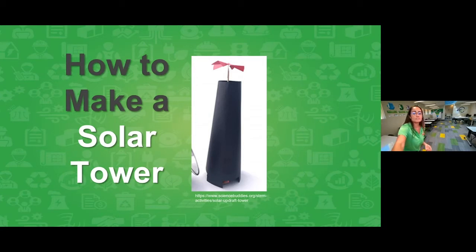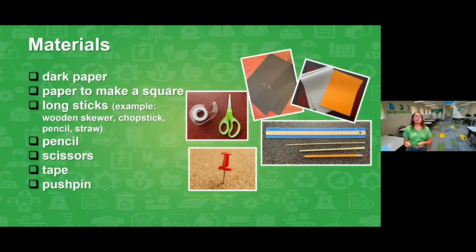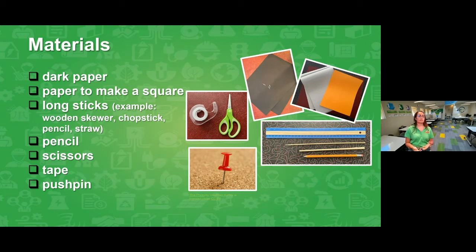Since we're doing this as a live stream, if you don't have all your materials ready, that's totally okay — you can pause, grab things, come back, or watch the archived version on our YouTube channel. For your solar tower you'll need dark paper. I'll explain more about why specifically dark paper. If you don't have dark paper, white paper is fine — just scribble with a black marker or crayon to darken it up. Even dark blue paper works.